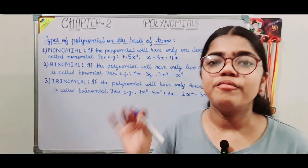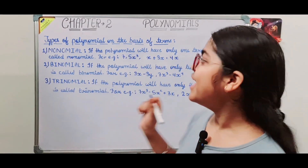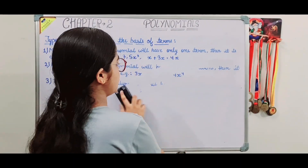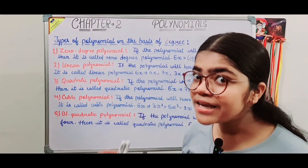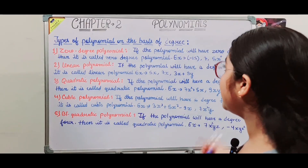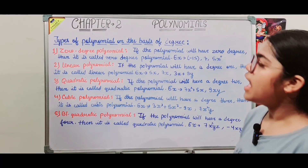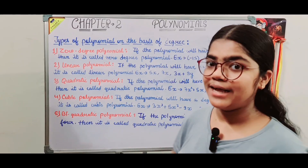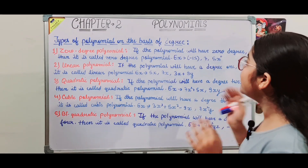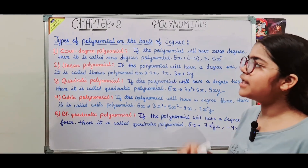So those were the types of polynomials on the basis of terms. Now let's understand types of polynomials on the basis of degree.